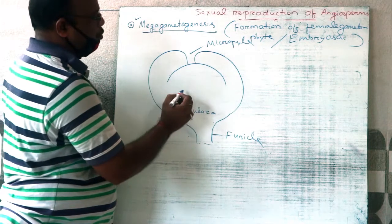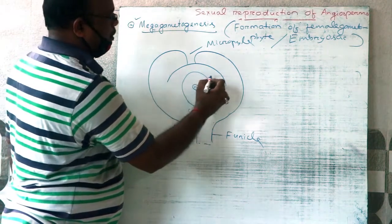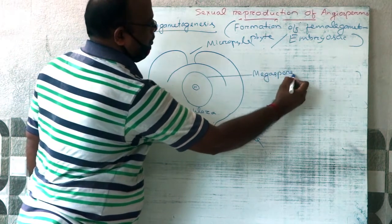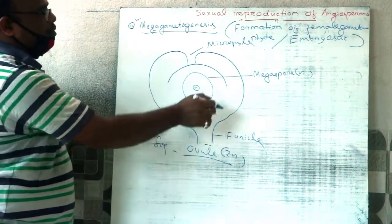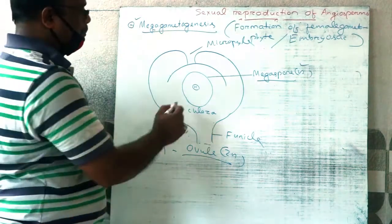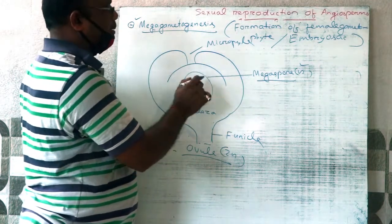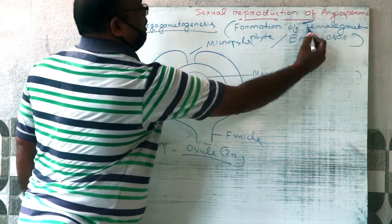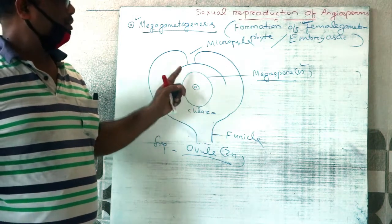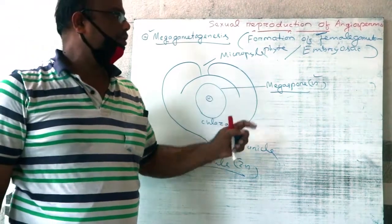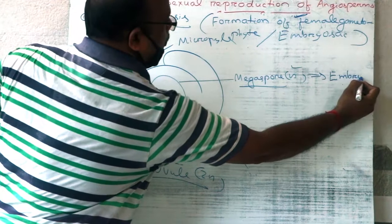Inside a mature ovule, there is presence of a haploid cell called the megaspore. The ovule is diploid, but the megaspore is haploid. This haploid megaspore germinates inside the ovule to produce a small rudimentary haploid female plant known as the female gametophyte or embryo sac.